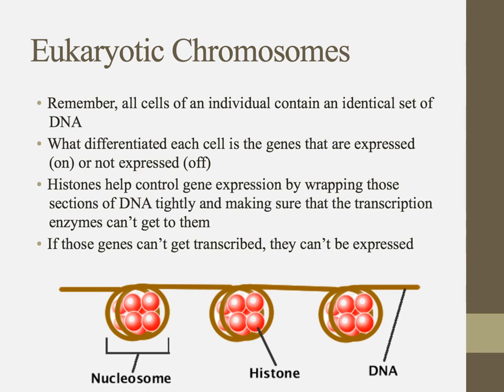Remember that you were the result of the fusion of an egg with a sperm. That single fertilized egg is called a zygote, and it contains all of the DNA that you're ever going to have. After conception, that zygote is going to start multiplying — from two to four, from four to eight — and eventually to the trillions of cells that make up your body. So all of the cells in your body contain a complete and identical set of DNA.